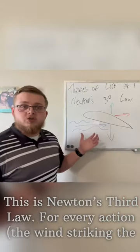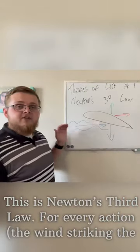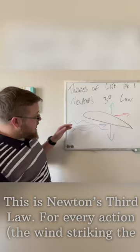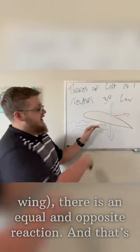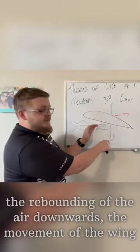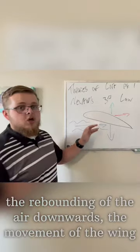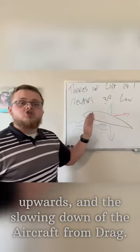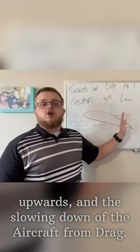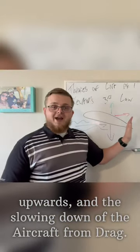This is Newton's third law: for every action, there's an equal and opposite reaction. That's the rebounding of the air downwards, the movement of the wing upwards, and the slowing down of the aircraft from drag.